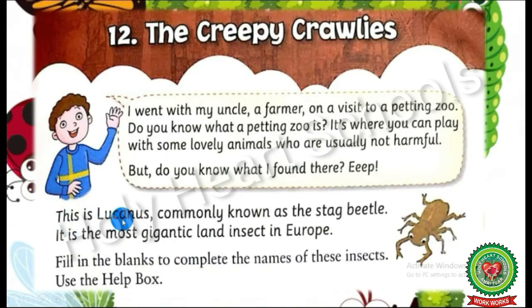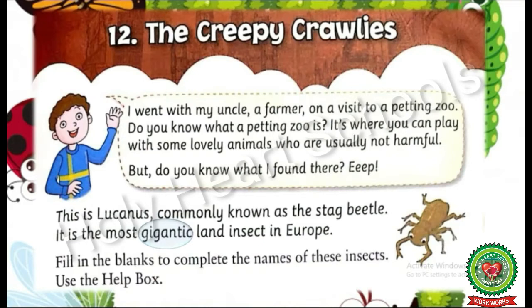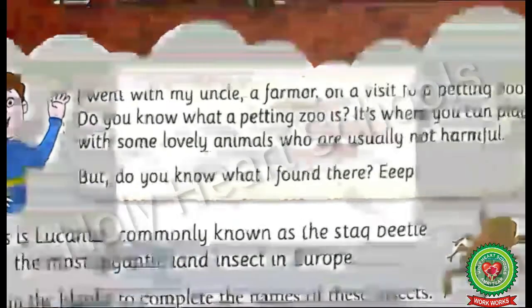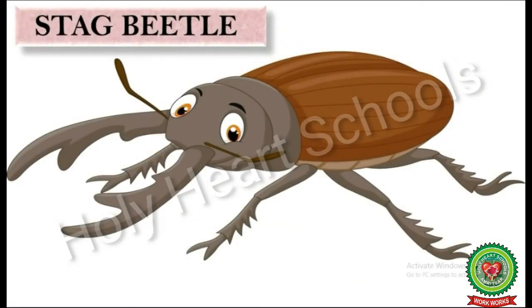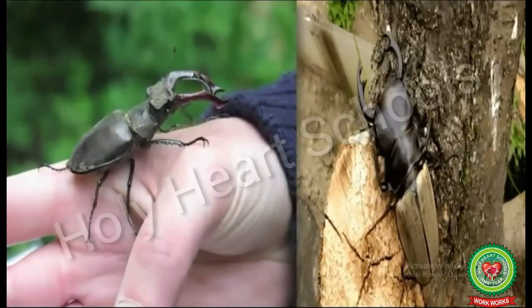This is Leucanus, commonly known as the stag beetle. It is the most gigantic land insect in Europe. Write down the meaning of gigantic: very large. This insect is the stag beetle. It belongs to the family of Leucanus. This is the very large land insect in Europe.